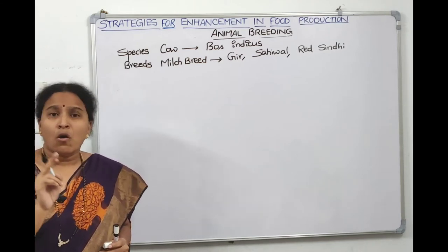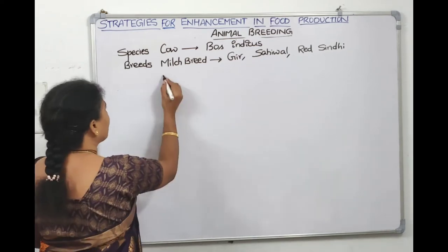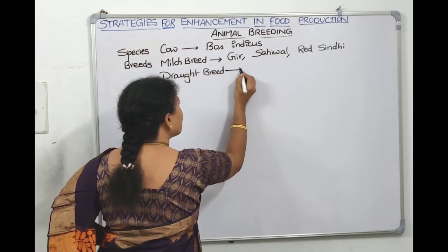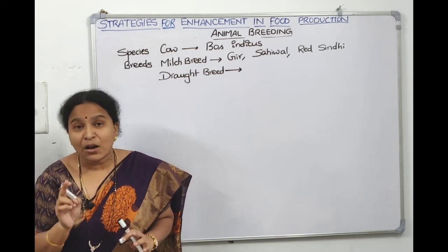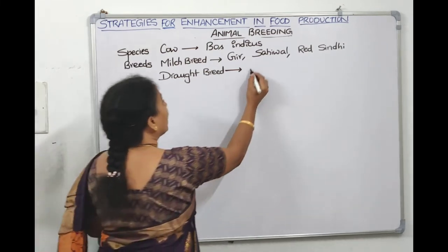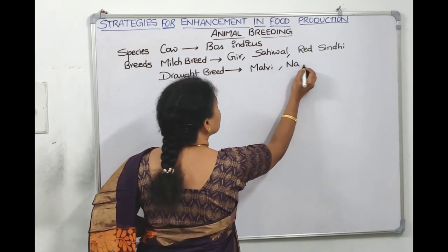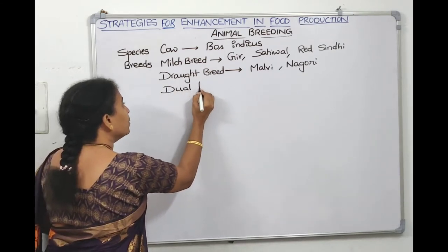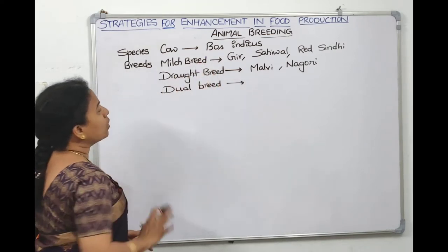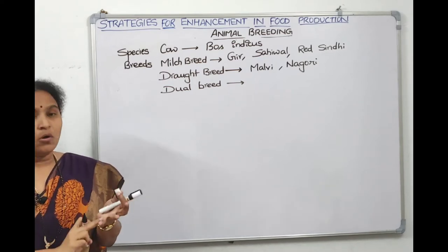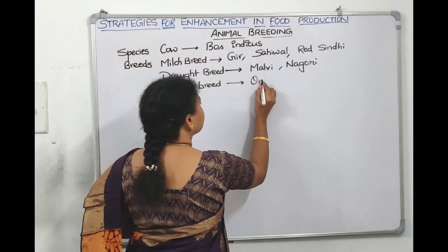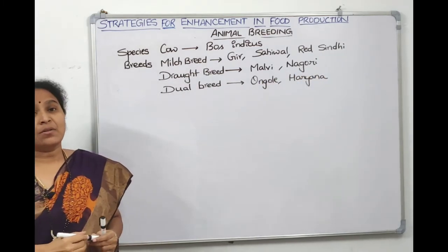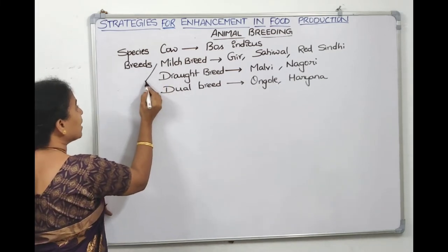Under draught breeds, examples are Malvi and Nagori — these cows have poor milk production but are used for agricultural purposes. Under dual breeds — cows that can give milk and are used for agriculture — examples are Ongole and Haryana. These three categories — milch, draught, and dual — all fall under indigenous breeds.